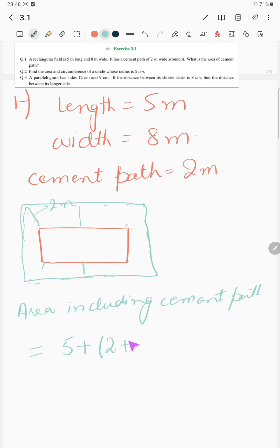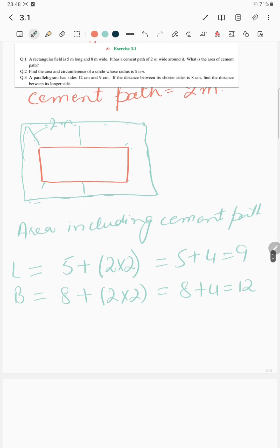So it would be 2 multiplied by 2. And breadth would be 8 plus 2 multiplied by 2, which is equal to 5 plus 4 equals 9, and 8 plus 4 equals 12.